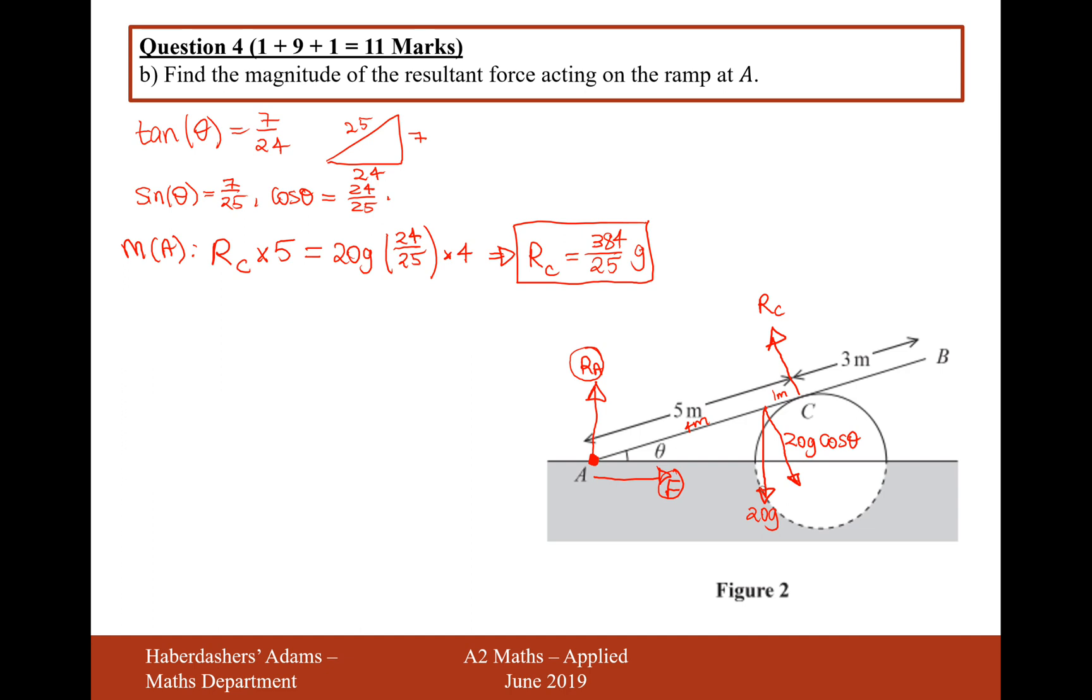Let's now resolve upwards and downwards for the whole system. Everything going upwards must balance with everything going downwards. So upwards is going to be RA plus RC times cos theta. That's RA plus 384 over 25 times G times cos theta, which is 24 over 25, equals the downward force, which is just 20G.